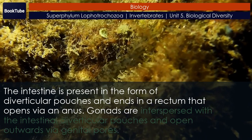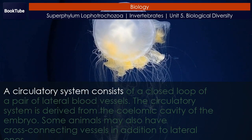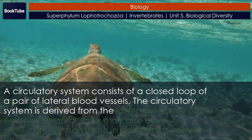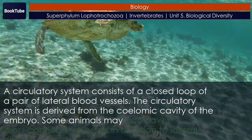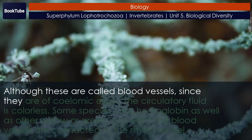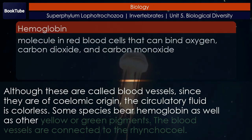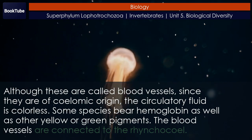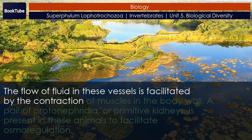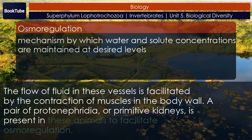Digestive system. The Nemertini show a very well-developed digestive system. A mouth opening ventral to the rhynchocoel leads into the foregut, followed by the intestine. The intestine is present in the form of diverticular pouches and ends in a rectum that opens via an anus. Gonads are interspersed with the intestinal diverticular pouches and open outwards via genital pores. A circulatory system consists of a closed loop of a pair of lateral blood vessels. The circulatory system is derived from the coelomic cavity of the embryo. Some animals may also have cross-connecting vessels; since these are of coelomic origin, the circulatory fluid is colorless. Some species bear hemoglobin as well as other yellow or green pigments. The blood vessels are connected to the rhynchocoel, and the flow of fluid is facilitated by contraction of muscles in the body wall. A pair of protonephridia, or primitive kidneys, is present to facilitate osmoregulation. Gaseous exchange occurs through the skin.